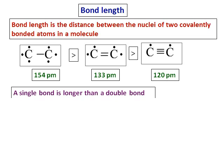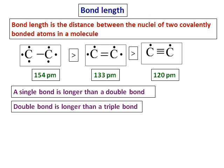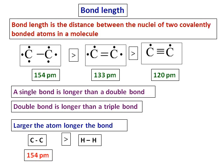The bottom line is: a single bond is longer than a double bond, and a double bond is longer than a triple bond. You need to remember this rule but not the exact values. Also, the larger the atom, the longer the bond. Since carbon is larger than hydrogen, a carbon-carbon bond at 154 pm is longer than a hydrogen-hydrogen bond at 74 pm.